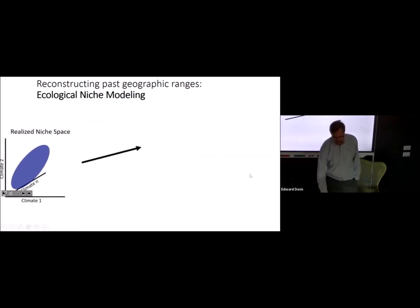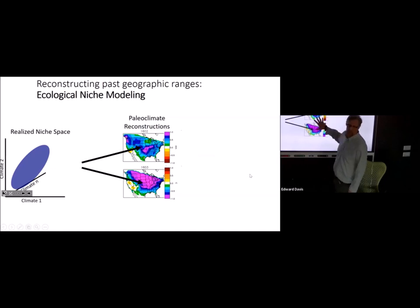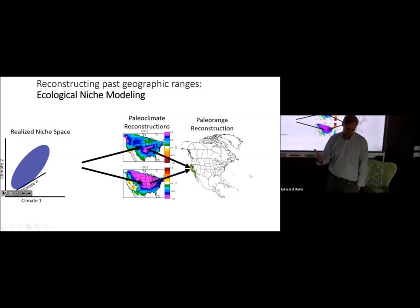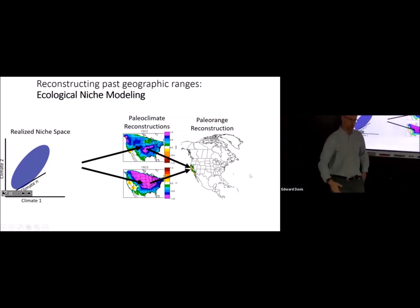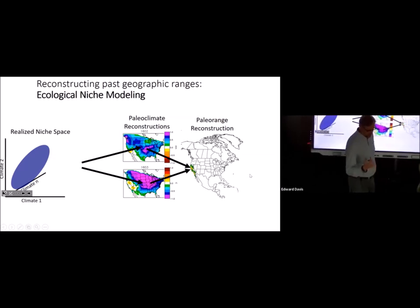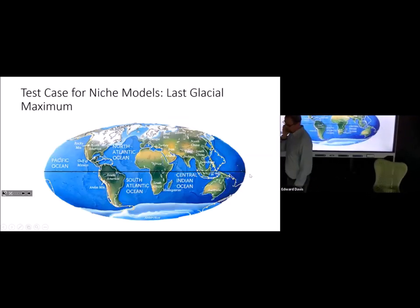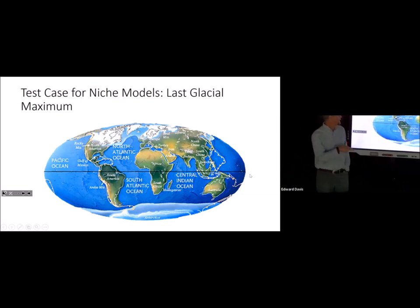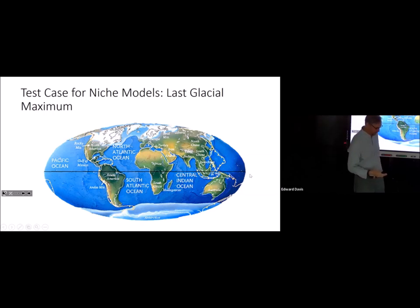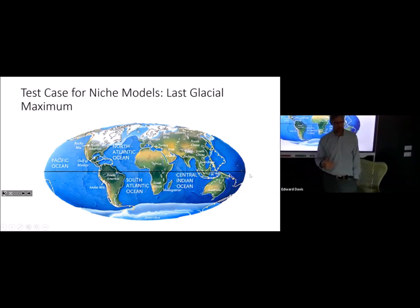You can use that realized niche placed onto paleoclimate reconstructions or projections of future climate to come up with potential new distributions for that species in the altered environment. A lot of research uses this approach to project species distributions into the future given a 2100 climate surface from climate models. It's also possible to project it backwards to the last glacial maximum — a period about 20,000 years ago with a huge fossil record, large sample sizes, and climate that can be modeled with reasonable confidence.